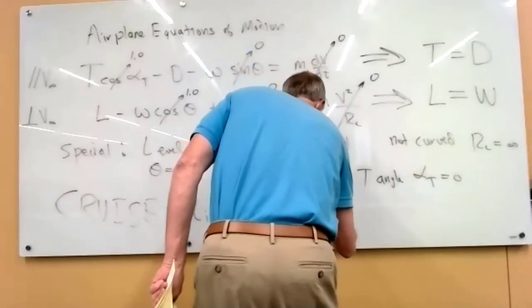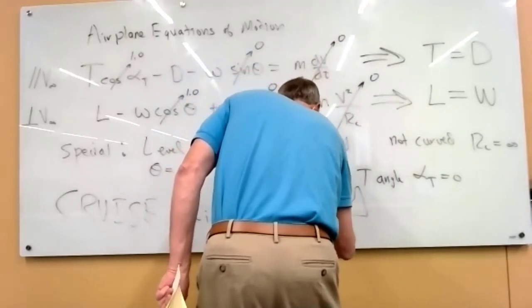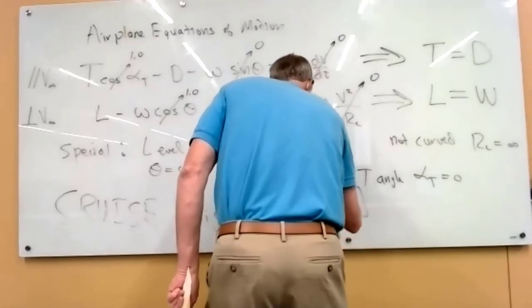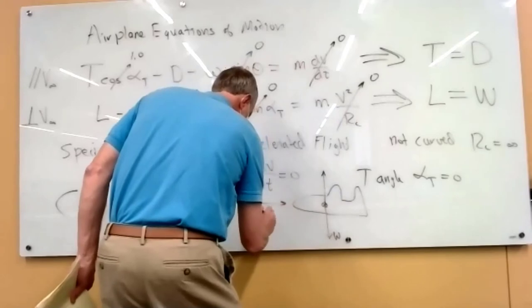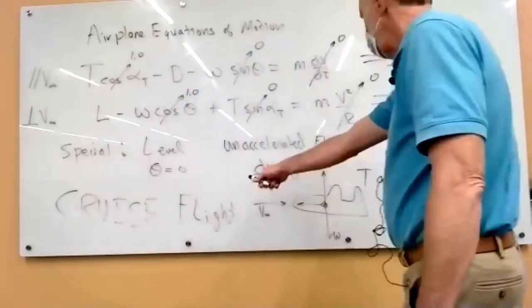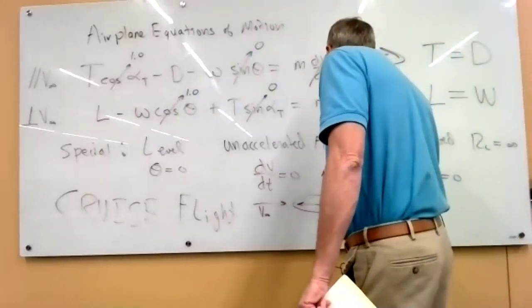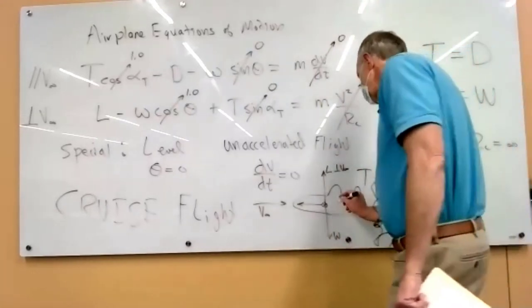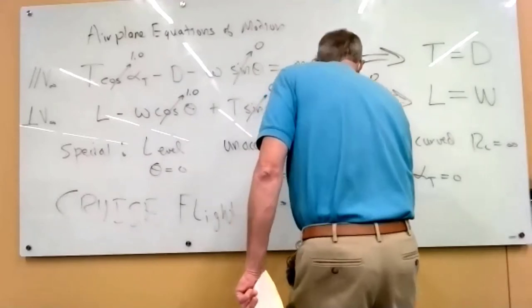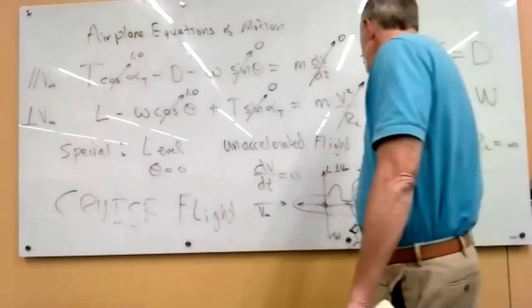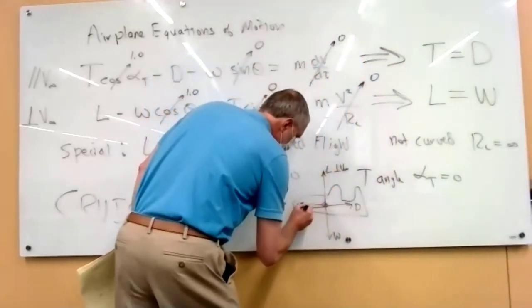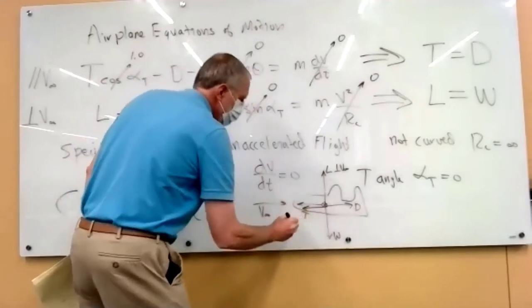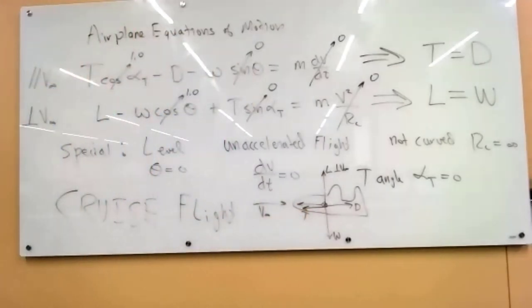Which you can get directly from drawing the airplane in this flight condition to start out with. The velocity vector is straight across, so the relative wind is like that. So the lift is perpendicular to V infinity, exactly counteracts the weight. And the drag is backward, because it's perpendicular to the lift or parallel to V infinity. And the thrust angle is pointed forward, so the thrust equals the drag.